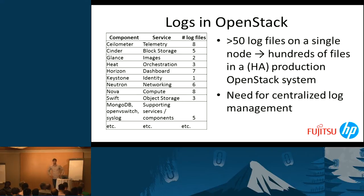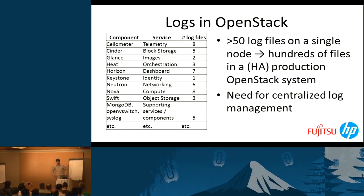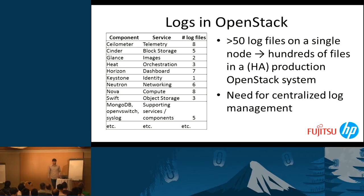This list already comes up to 48 log files on just a single node. If we go into a production OpenStack cloud dealing with multiple nodes — up to several hundreds or even a thousand nodes — the total number of log file locations easily adds up to a three or four digit number or even higher. You cannot cope with this using standard Linux tools like grep or sed; you need a more sophisticated centralized log management solution.